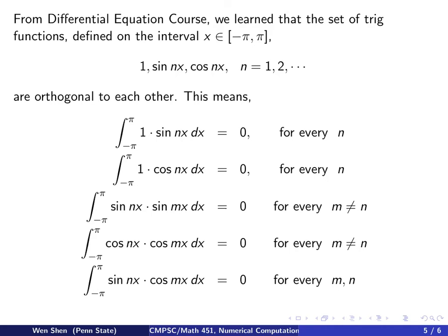Now let's look at another family of orthogonal functions. So from your differential equation course in sophomore 200 level, Math 250 or Math 251, we have learned that the set of trig functions defined on the interval from negative pi to pi, these functions, that is 1 and sine nx, cosine nx for n equals to 1, 2, 3, 4, all the way to infinity. So infinitely many of them, they are all orthogonal to each other.